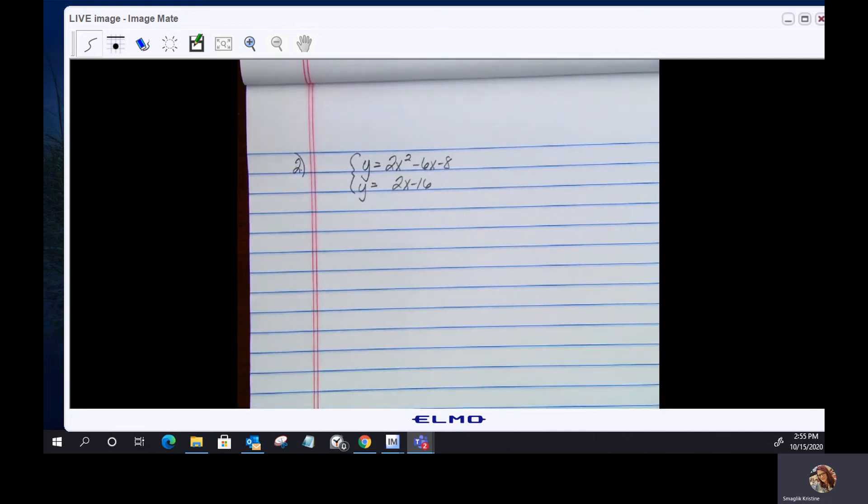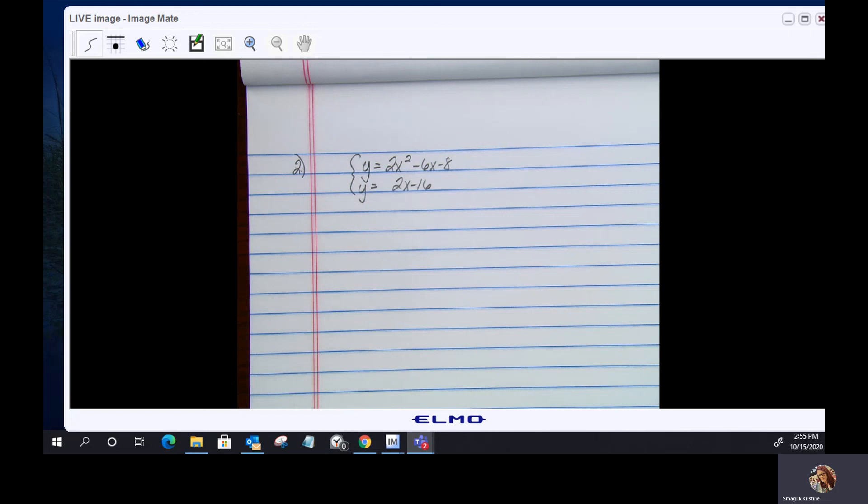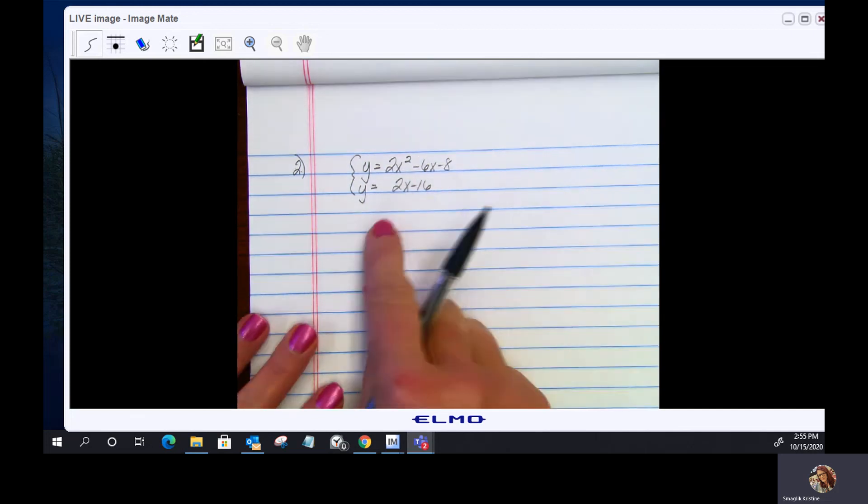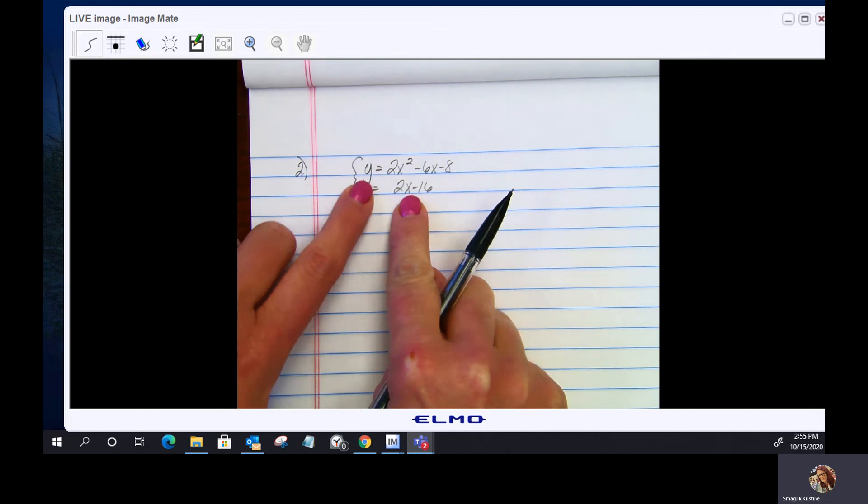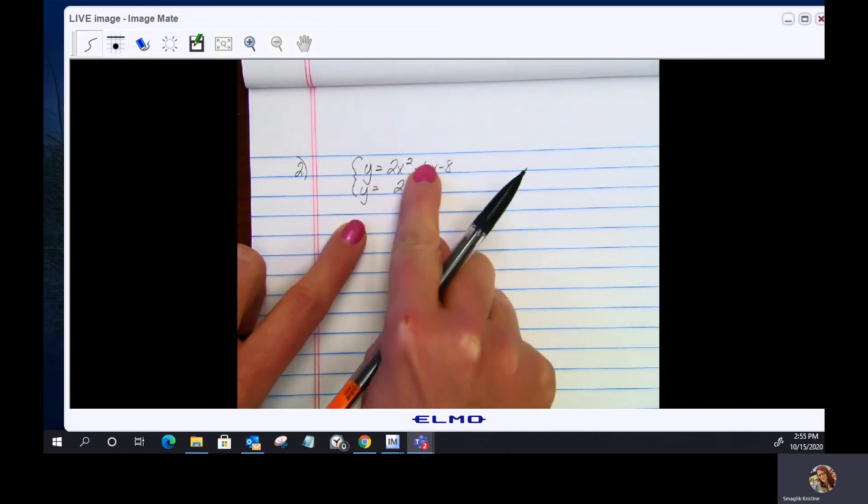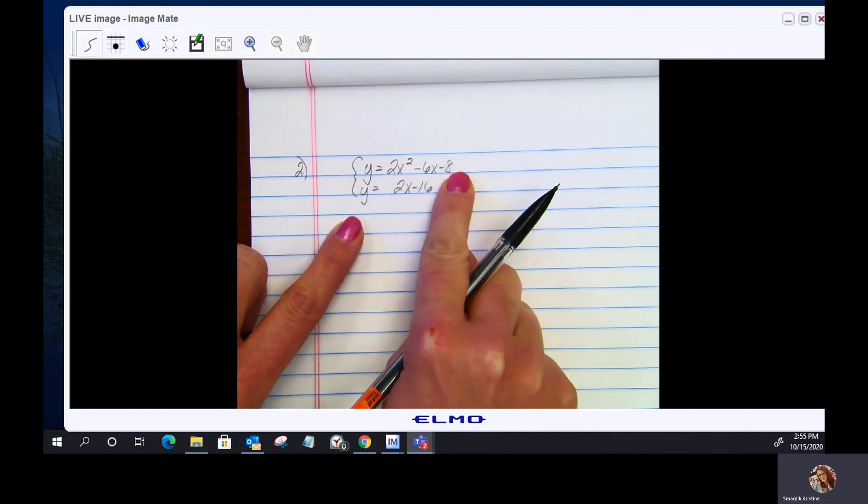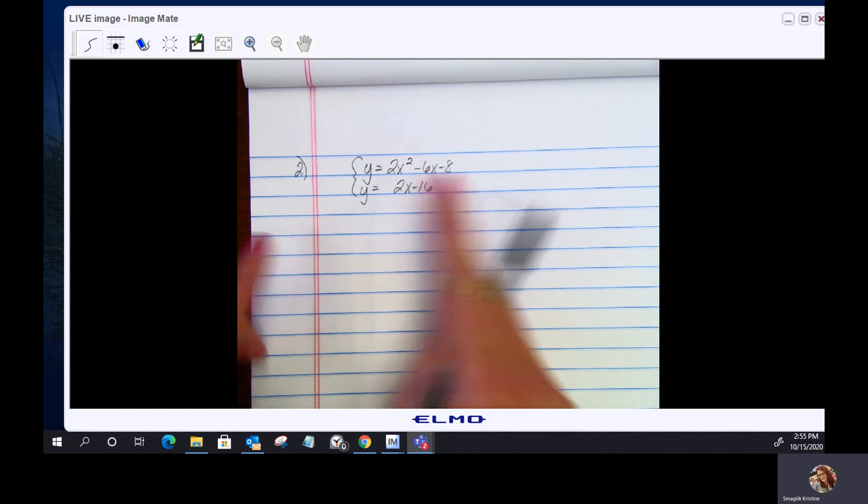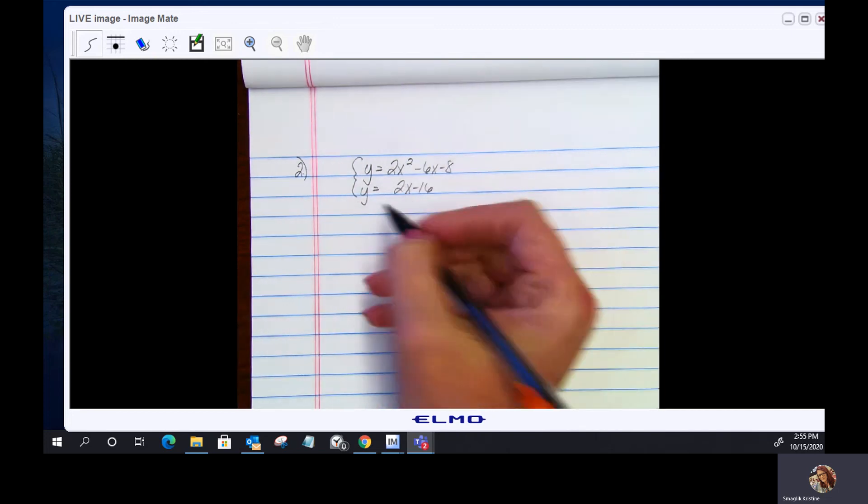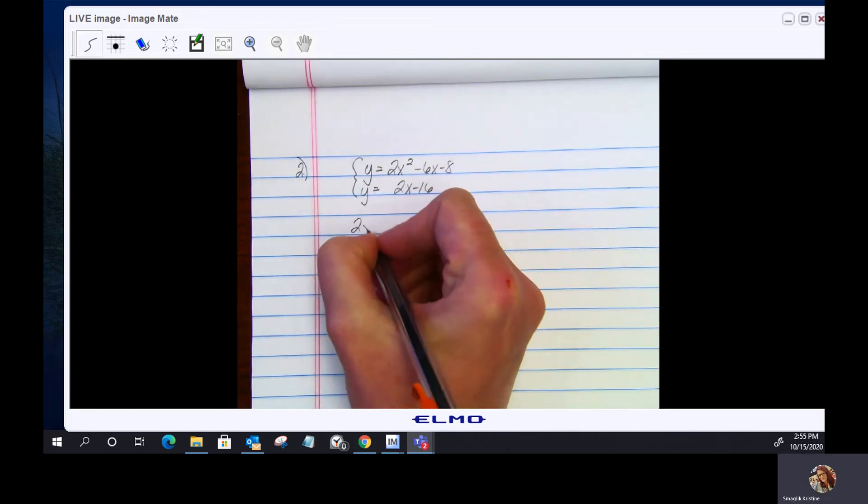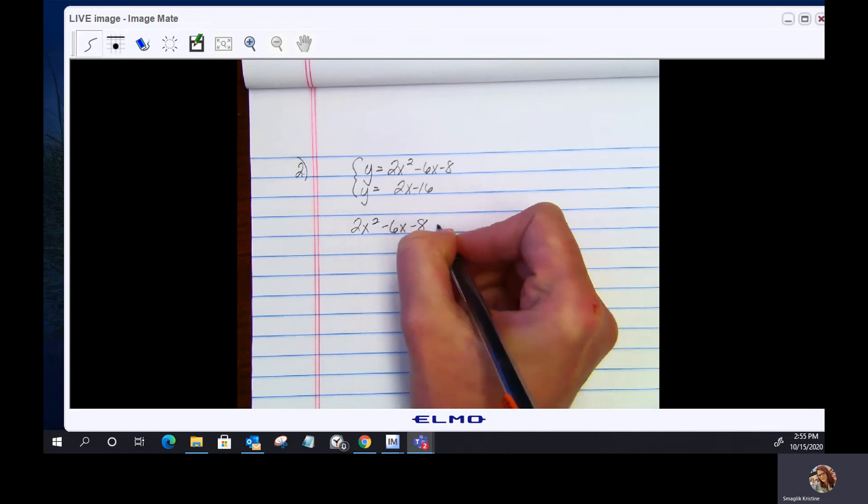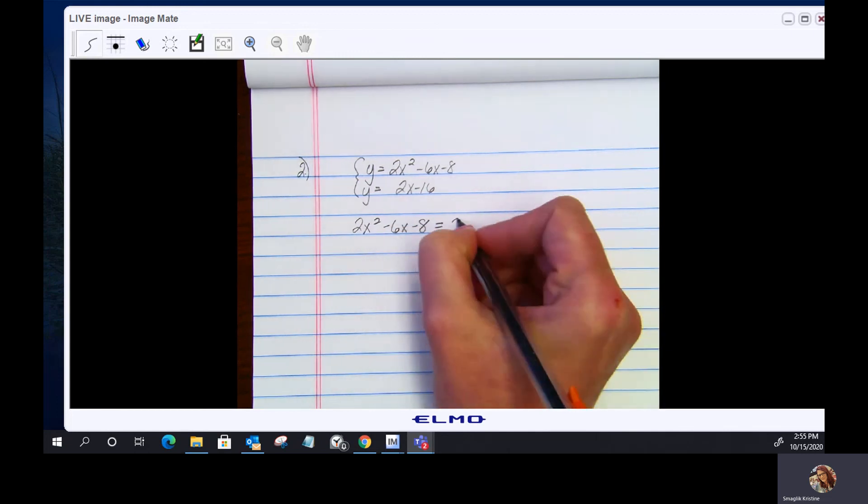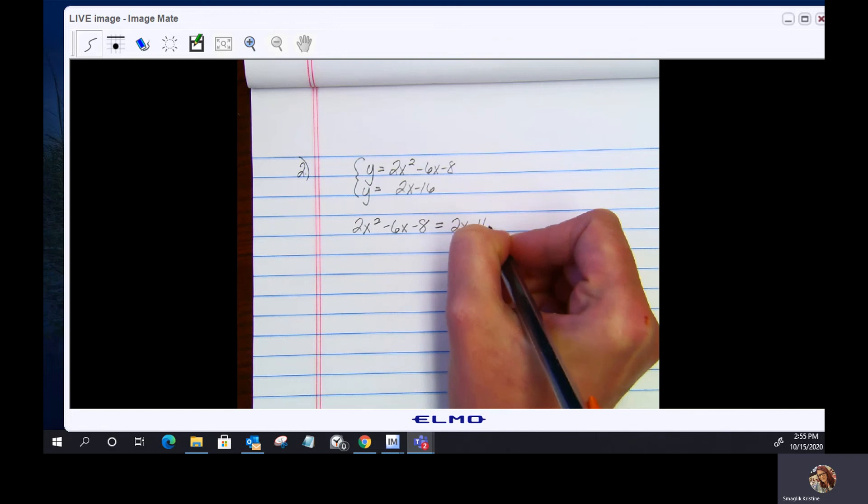Now on this one, notice both of them are solved for y. So all I'm going to do, I'm just going to set these equal because, I mean, even if I just substitute 2x minus 6 in for y or 2x squared minus 6x minus 8 into y here, it doesn't matter. So here, I'm going to go this way. 2x squared minus 6x minus 8 equals 2x minus 16.